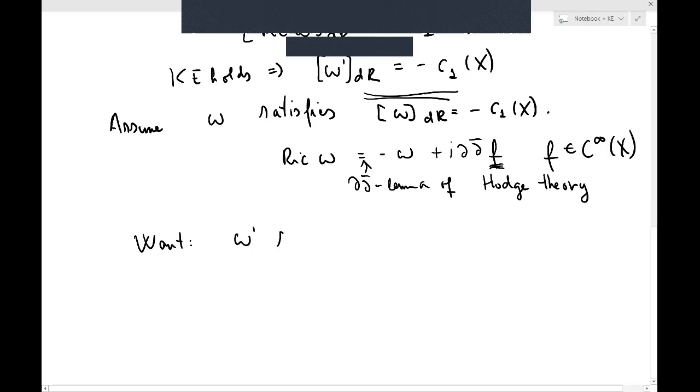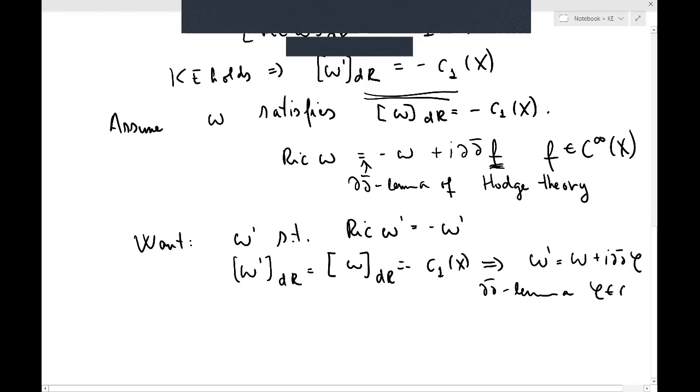So we want omega prime such that Ricci of omega prime equals negative omega prime, but also omega prime has the same cohomology class as omega negative c_1(X). So another application of ∂∂̄ lemma tells us that you can actually write omega prime as omega plus i∂∂̄φ for some φ smooth function, and it's uniquely determined up to a constant.